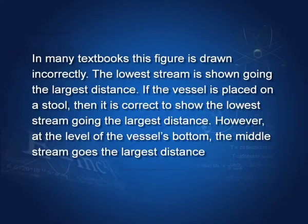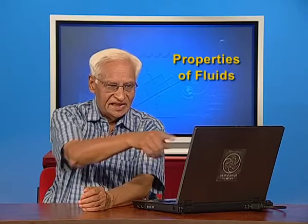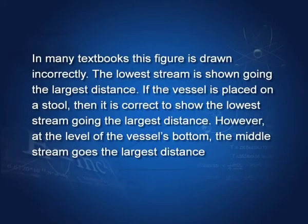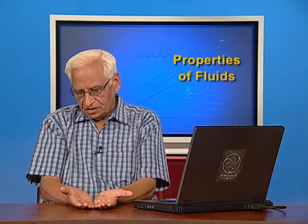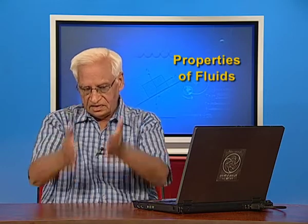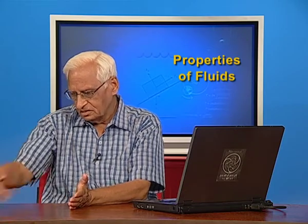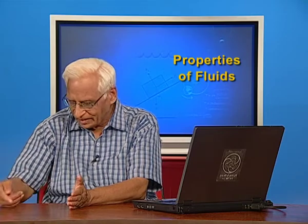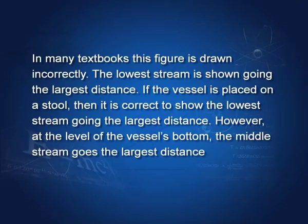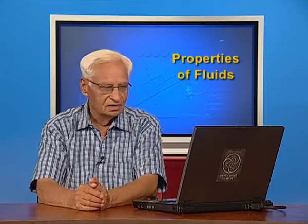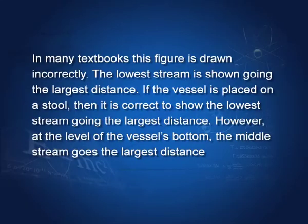I have gone to this length to explain to you this diagram because many textbooks get it wrong. You see, the lowest stream is shown going through the largest distance, which as we have calculated is not true. If the vessel is placed at a certain height, say on a stool or even higher, then it is correct to show the lowest stream going the largest distance because the pressure is highest. If you are talking of the level at which the vessel is placed, say the vessel is placed on this table top, and you are considering where the streams strike, then the second one goes the highest distance. You would have realized that the situation is similar to that of a projectile which has maximum range when it is projected at an angle of 45 degrees.